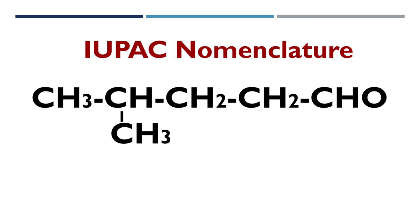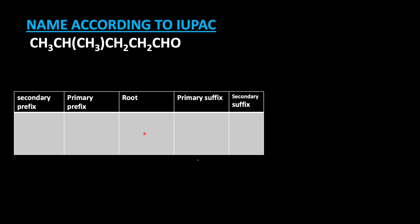Welcome to Aurora Chemistry for Everyone. Here we are going to analyze how to name the given compound according to the IUPAC rule: CH3 CH CH3 CH2 CH2 CHO. You can see the format on screen — but before discussing the format, let us review the IUPAC rules.